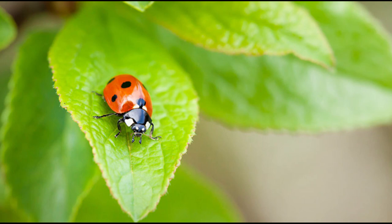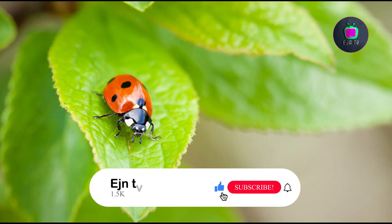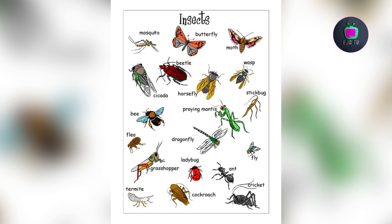Karibu katika EJNTV. Advantages of insects - au umuhimu kwa wadudu. Insects ni largest group within the arthropods. Insects wana include butterfly, bees, beetle, stink bugs, locust, dragonfly, mosquito, water scorpion, housefly. Yani wadudu po wengi, wengi, wengi.